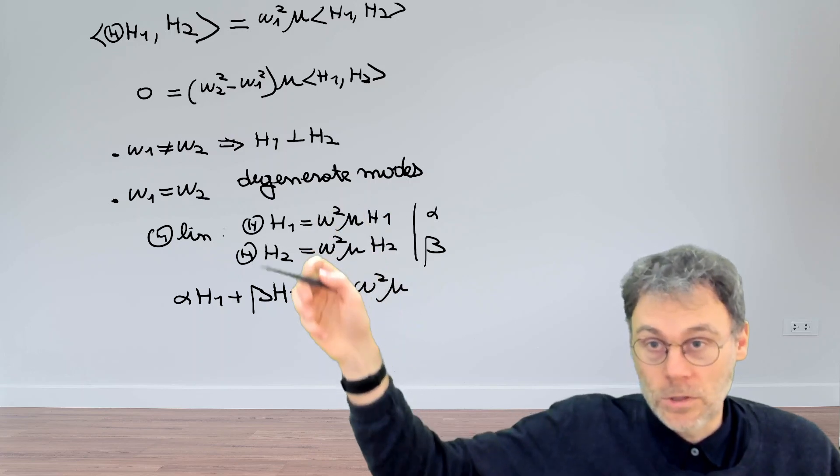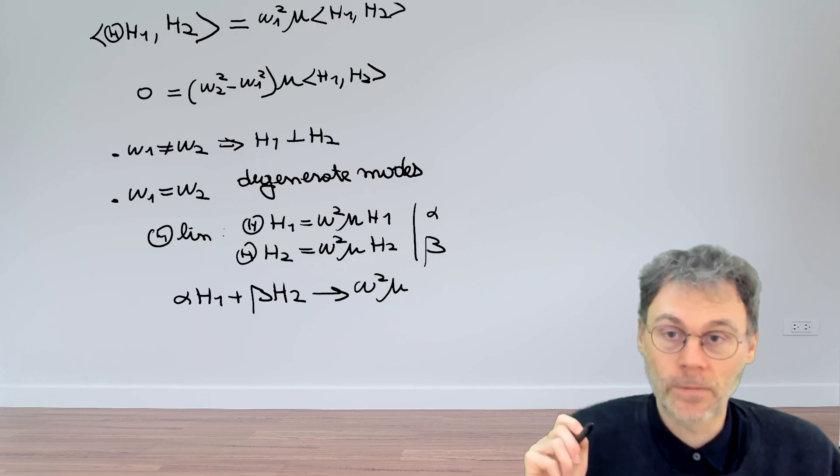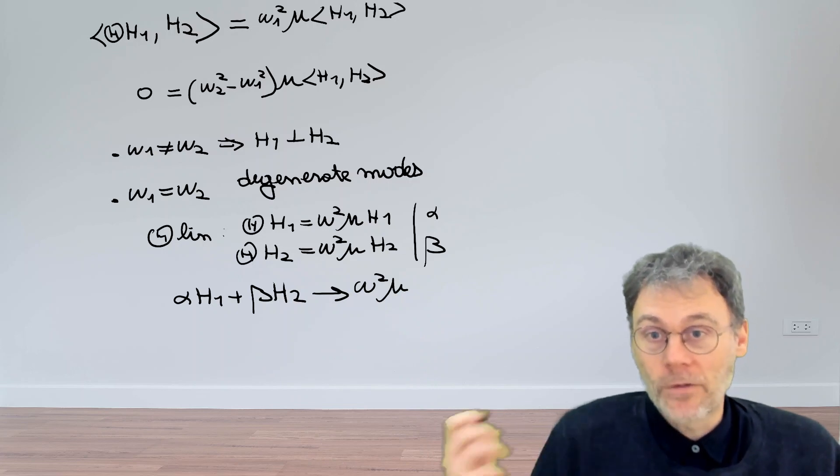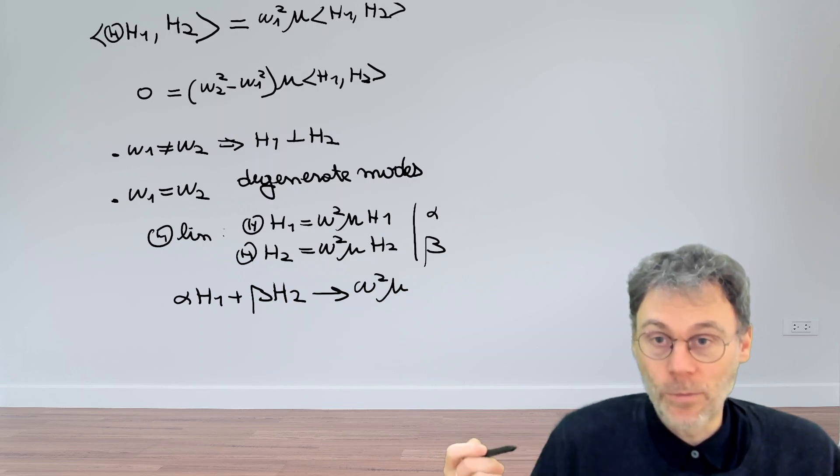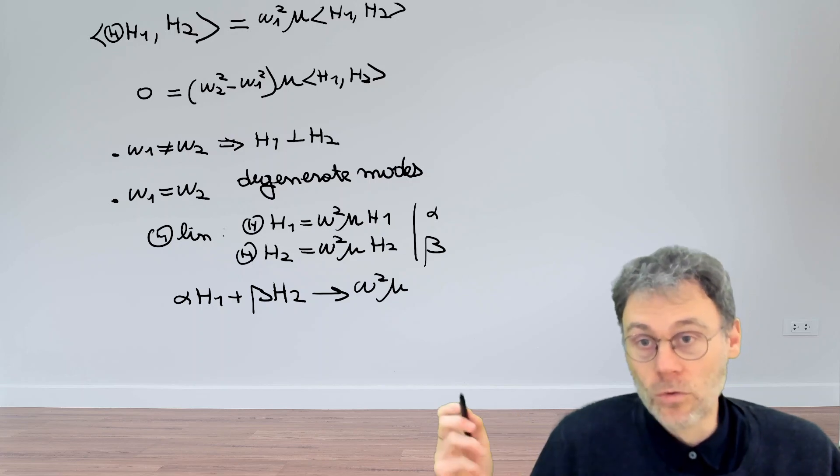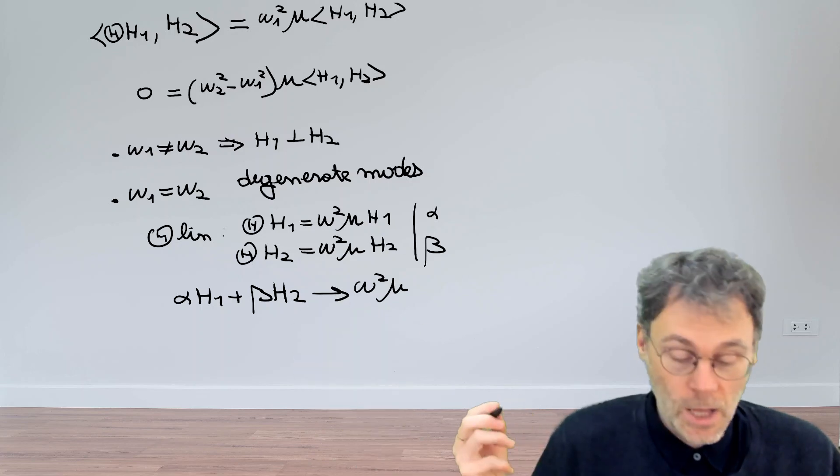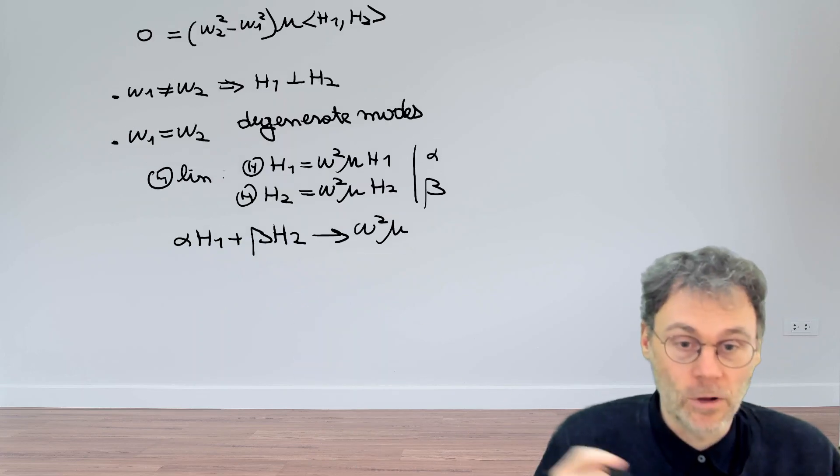So basically you have, in this case, a whole space of eigenfunctions spanned by these two solutions. And then, obviously, if you have this linear subspace here, it will be possible to construct a certain linear combination, or two linear combinations, which are orthogonal to each other.